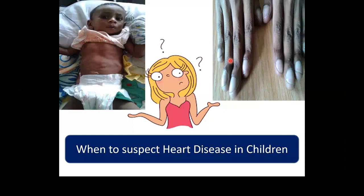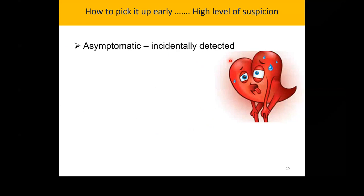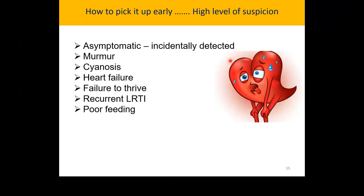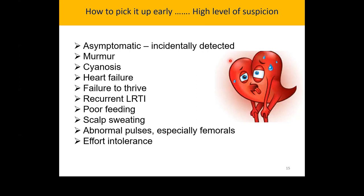When should you suspect heart disease in children? You need a high level of suspicion. Some can be asymptomatic and incidentally found, for example at a school medical inspection where a doctor hears a murmur. Children can present with cyanosis, heart failure, failure to thrive, recurrent respiratory tract infections, poor feeding, difficulty sucking, scalp sweating, abnormal pulses (especially weak femorals), effort intolerance — the child cannot play like peers and feels very tired — and palpitations and syncope.